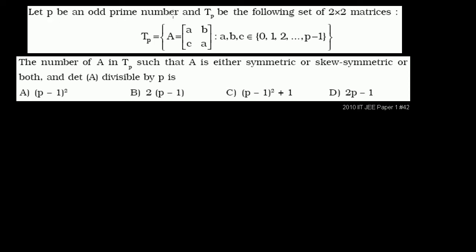Let p be an odd prime number, and T_p be the following set of 2×2 matrices. It's a set of matrices where each member a is made of entries lowercase a, b, c, and a, where these could take any values between 0 and p minus 1. Remember, p was an odd prime number — all prime numbers greater than 2 are odd.